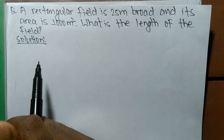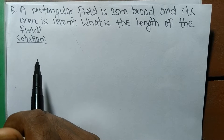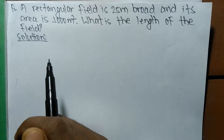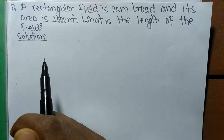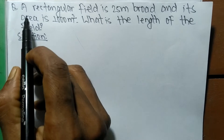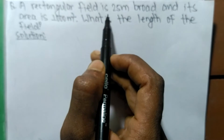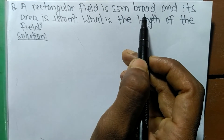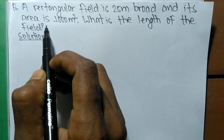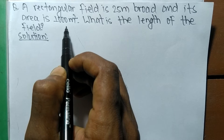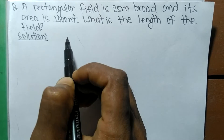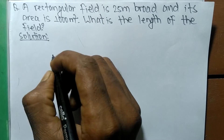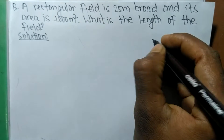Today in this video we are going to solve a mathematical word equation. The question is: a rectangular field is 25 meters broad and its area is 1000 meter square. What is the length of the field?